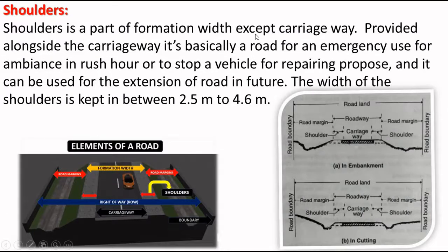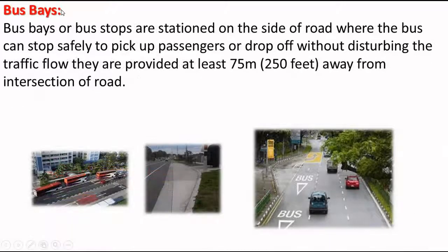The shoulder is a part of the formation width, excluding the carriageway, provided alongside the carriageway. It is basically a road for emergency use — for ambulances in a rush, or to stop a vehicle for repair purposes — and it can be used for future extension of the road. The width of the shoulder is kept between 2.5 meters to 4.6 meters.